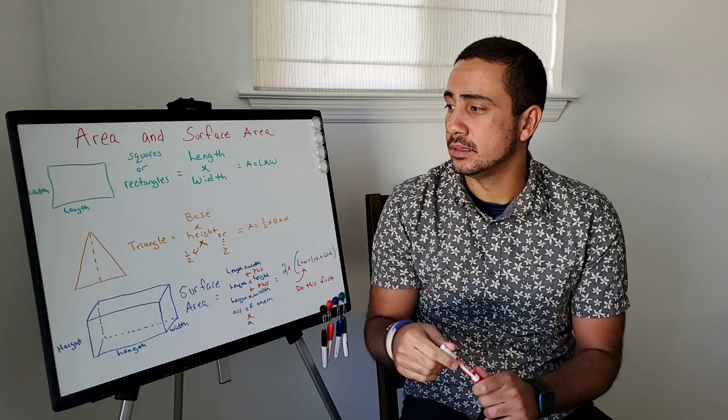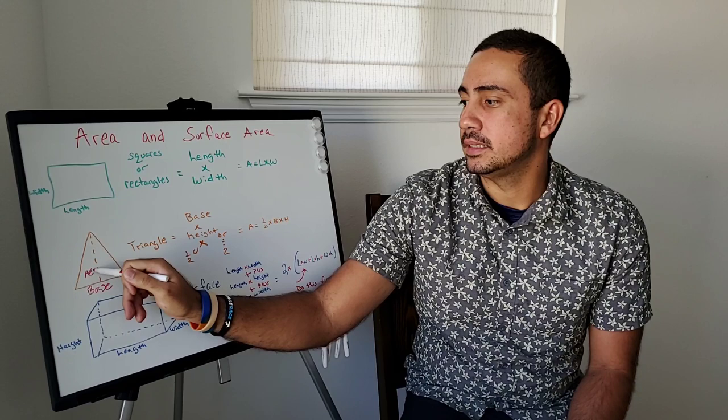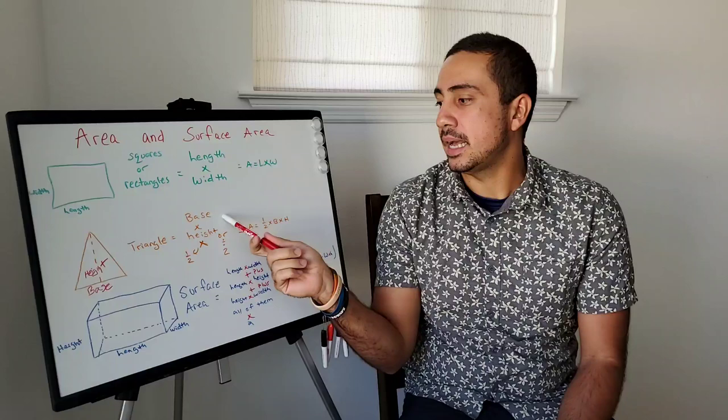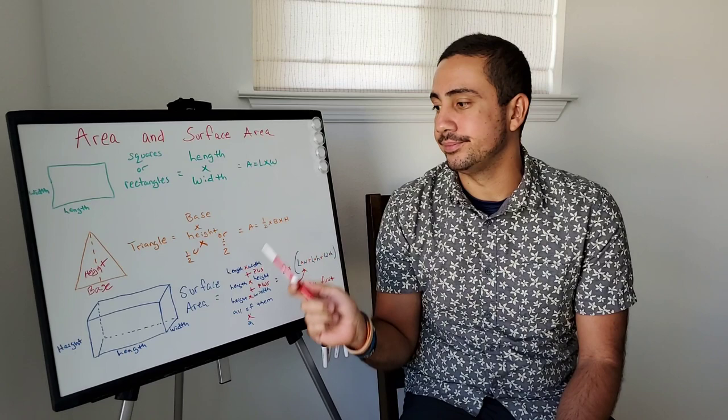Next, triangle. Triangle area is base times height. That's the base, and this is the height. So you're going to do base times height and then times one-half. Or, much simpler, divide the answer by 2. So it would be base times height divided by 2.